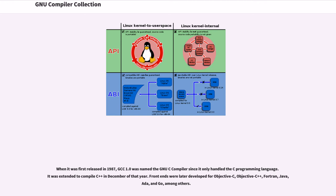When it was first released in 1987, GCC 1.0 was named the GNU C compiler since it only handled the C programming language. It was extended to compile C++ in December of that year. Front ends were later developed for Objective-C, Objective-C++, Fortran, Java, Ada, and Go, among others.